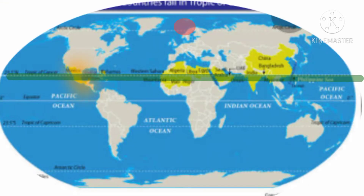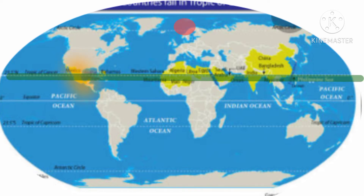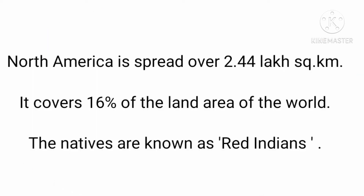In this figure, you can see the North Pole is shown by a red blinking dot, the Tropic of Cancer is shown by a green blinking light, and Mexico is shown by an orange blinking light. The North Pole passes from the north of Canada, and the Tropic of Cancer passes through Central Mexico. North America is spread over 24.4 million square kilometers, covering 16% of the land area of the world.